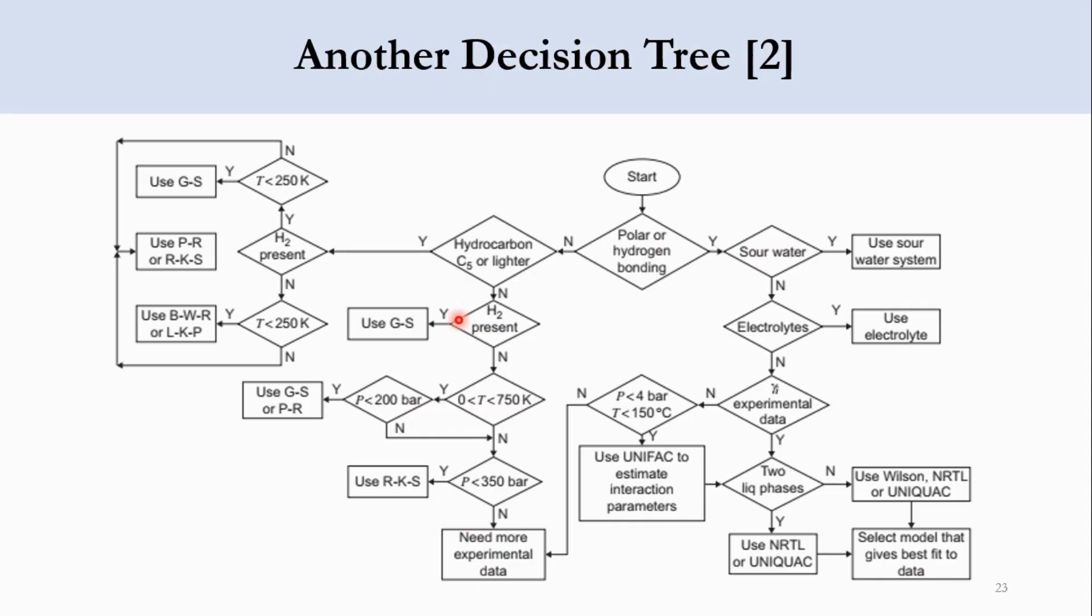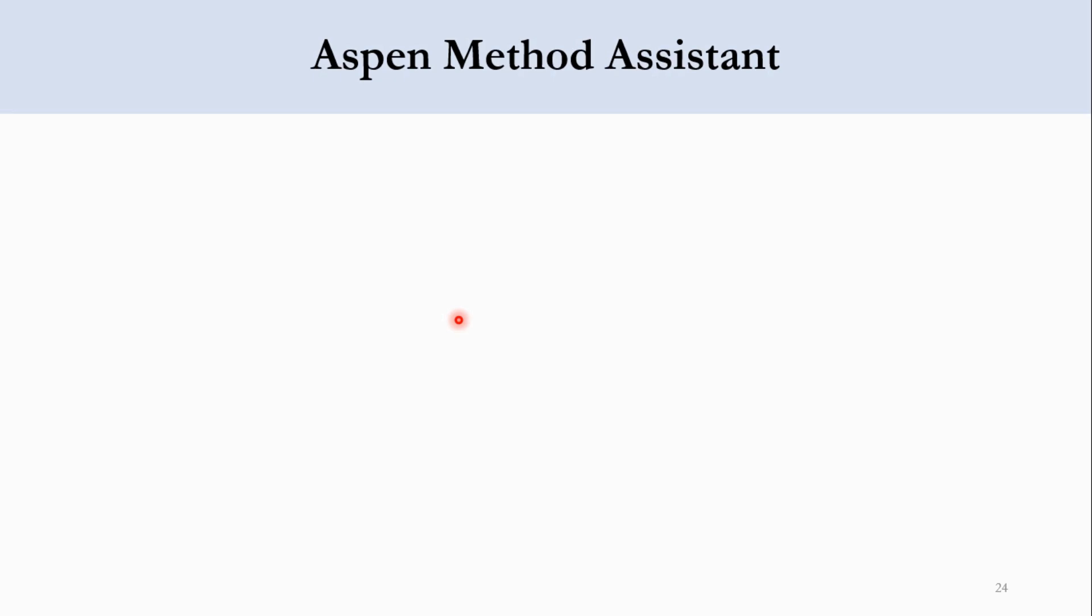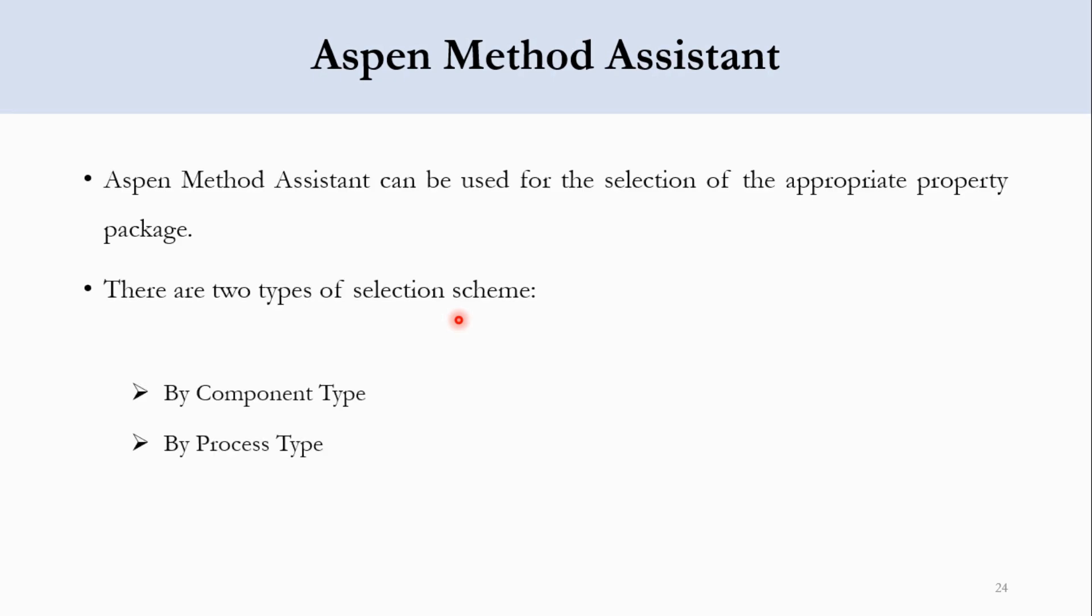There is another way of doing it, which is to use Aspen Method Assistant. The method assistant usually works on two principles: by component type and by process type. But we will discuss it in our upcoming lecture.